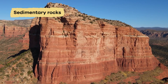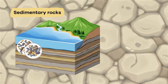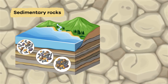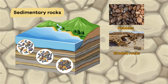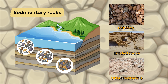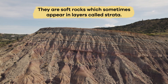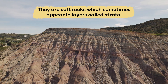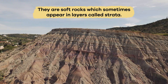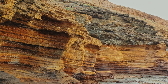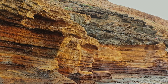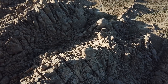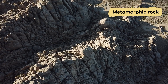Sedimentary rocks are formed from compacted sediment comprised of shells, pebbles, eroded rocks, or other materials. They are soft rocks, which sometimes appear in layers called strata, and can be turned back into sediment or pressurized into metamorphic rock.